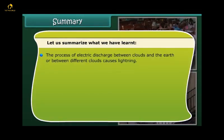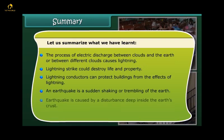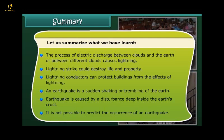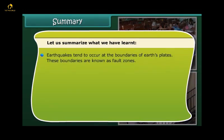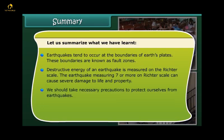The process of electric discharge between clouds and the earth or between different clouds causes lightning. Lightning strike could destroy life and property. Lightning conductors can protect buildings from the effects of lightning. An earthquake is a sudden shaking or trembling of the earth caused by a disturbance deep inside the earth's crust. It is not possible to predict the occurrence of an earthquake. Earthquakes tend to occur at the boundaries of earth's plates. These boundaries are known as fault zones. Destructive energy of an earthquake is measured on the Richter scale. The earthquake measuring 7 or more on Richter scale can cause severe damage to life and property. We should take necessary precautions to protect ourselves from earthquakes.